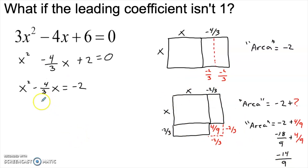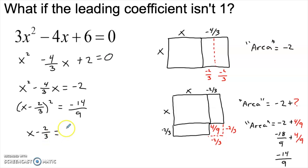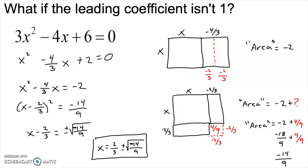So if I want to add negative 2 to 4 ninths, I just need to ask myself: what is the same as negative 2 that has a 9 in the denominator? Well, that would be negative 18 — negative 18 divided by 9 is negative 2. So adding 4 ninths to our negative 18 ninths, we get a total area of negative 14 ninths. Now that we have the area of our square, we can go back to the equation and replace the old square and rectangle with the new larger square. That gives us x minus 2 thirds quantity squared, whose area is negative 14 over 9. We can take the square root of both sides, giving us x minus 2 thirds equals plus or minus the square root of negative 14 over 9. And solving for x, we get 2 thirds plus or minus the square root of negative 14 over 9.